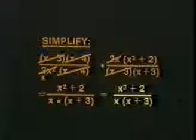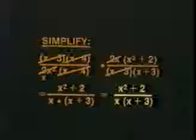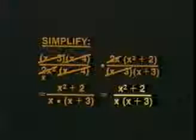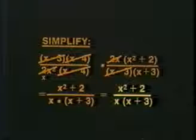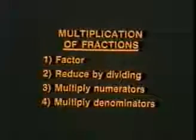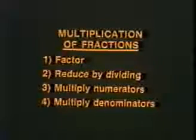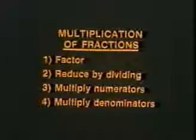Then I reduce by dividing, and multiply the few remaining terms to get my answer, which can't be reduced any further. Often, I want to leave my answer in factored form like this. So here it is — the whole process of multiplication.